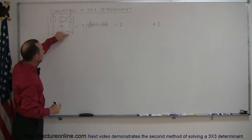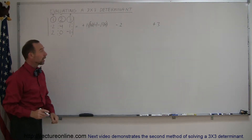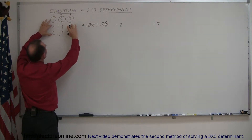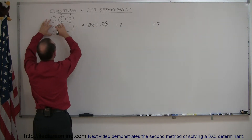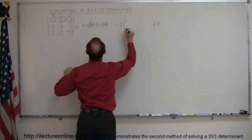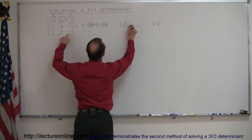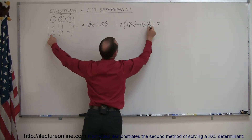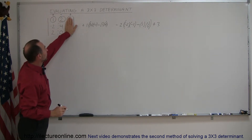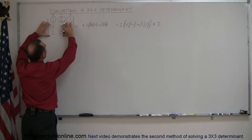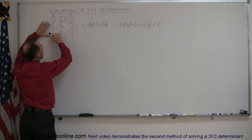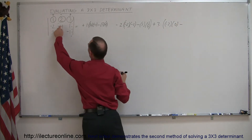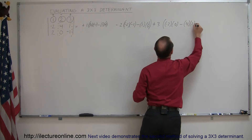Then you take the second element and put a negative in front of it. When you block out that row and column, you're left with those four remaining elements. So it's negative two times the quantity: negative one times one, minus one times two. Then you take the third element, block out this column and this row, and you're left with those four elements. So it's plus three times: negative two times zero, minus four times two.